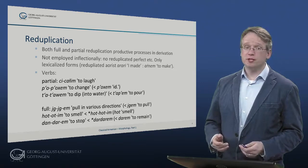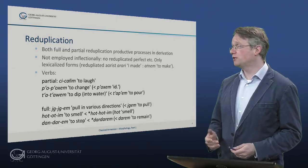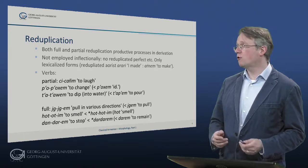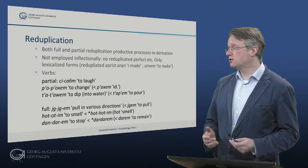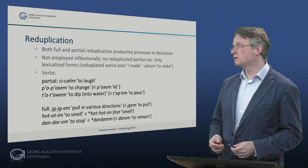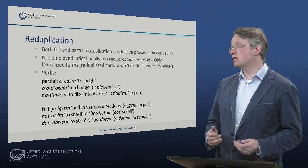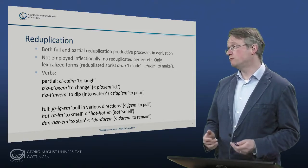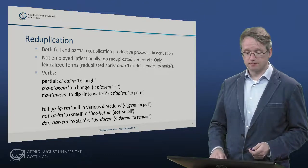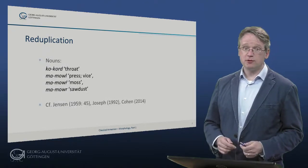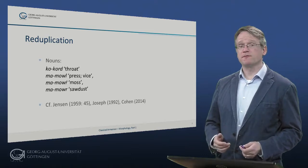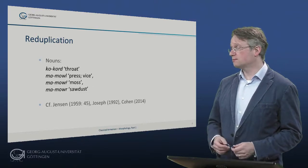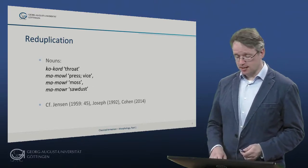For full reduplication, we have forms like dzg-zg-gem – pull in various directions (simple verb dzg-gem – to pull), or hot-hotim – to smell, which is very likely dissimilated from hot-hot-tim, and there's dandaram – to stop, possibly from dar-daram, with a simple verb daram – to remain. For nouns, we have examples such as cockard – throat, mamul – press, mamur – moss, and mamur – sawdust. This is a productive process in Classical Armenian.